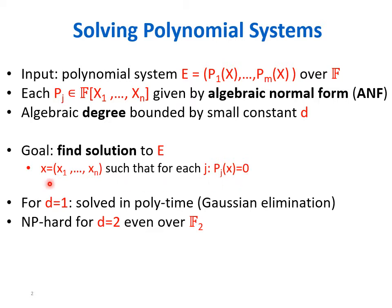The algebraic degree of each polynomial is bounded by a small constant d. The goal is to find a solution to E, meaning an assignment to all n variables that zeros all the polynomials. For d equals 1, the system is linear and can be solved in polynomial time using Gaussian elimination. However, the problem is NP-hard already for quadratic equations, even for the specific field F2.